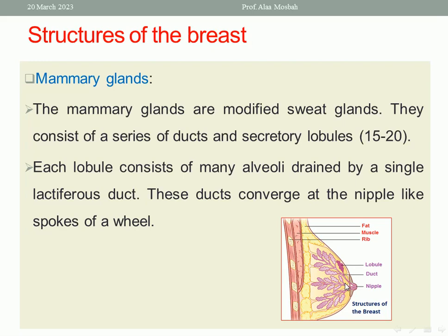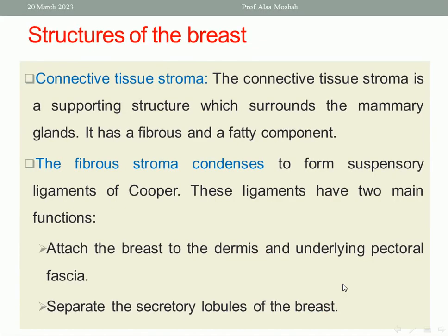That covers the mammary gland structure. Another component of breast structure is the connective tissue stroma — a supporting structure which surrounds the mammary gland. It has a fibrous and a fatty component. The fibrous stroma condenses to form the suspensory ligament of Cooper. These ligaments have two main functions: to attach the breast to the dermis and underlying pectoral fascia, and to separate the secretory lobules of the breast.